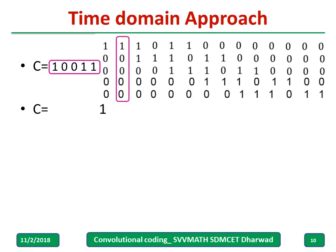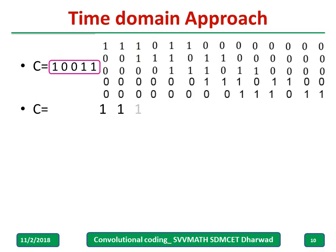For the second column, only one bit is non-zero so you will get 0 when multiplied. For 1 into 1 plus 0, you get 1. For the third column, with 1 and 1 present: 1 into 1 plus 0 into 1, all remaining are 0, so the answer is definitely 1.